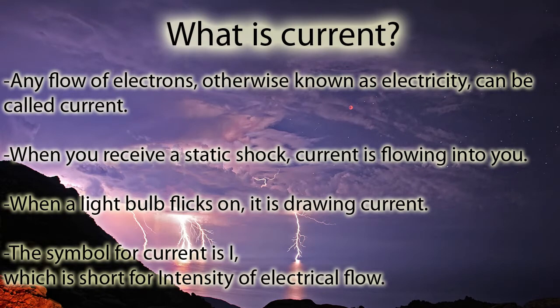What is current? Any flow of electrons, otherwise known as electricity, can be called current. When you receive a static shock, current is flowing into you. When a light bulb flicks on, it is drawing current. The symbol for current is I, which is short for intensity of electrical flow.